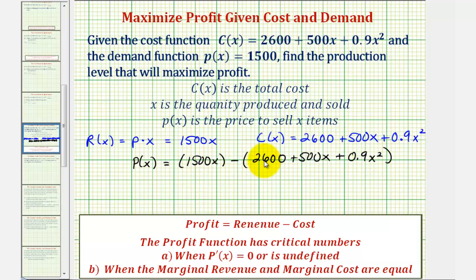Now we'll clear the parentheses and combine like terms. If it's helpful, because of the subtraction here, we can think of distributing a negative one. So we'd have P(x) equals 1500x minus 2600 minus 500x minus 0.9x squared. Combining like terms, our profit function P(x) is equal to negative 0.9x squared plus 1000x minus 2600.